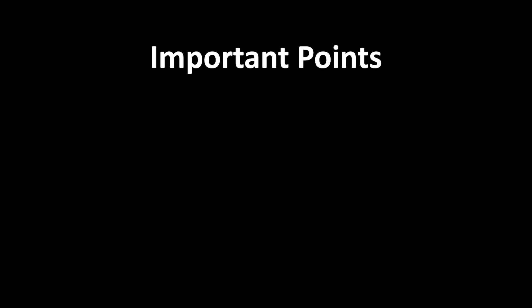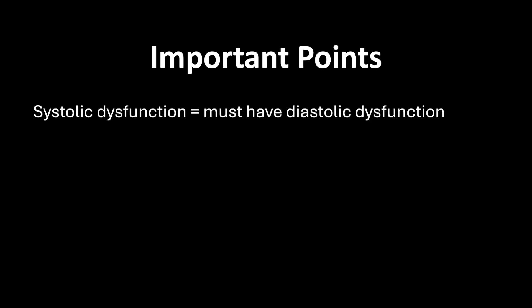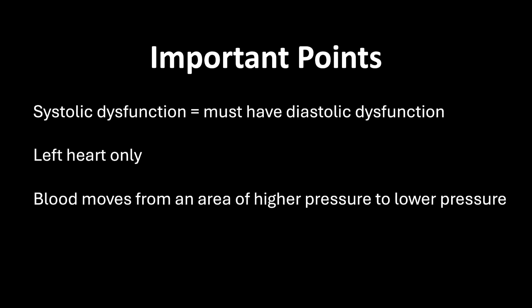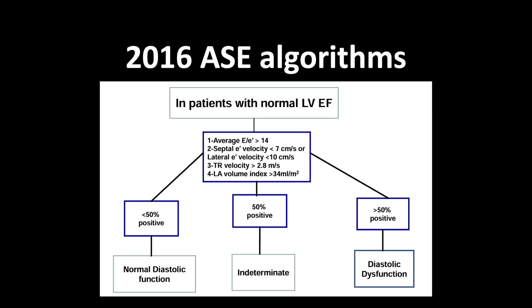A few important points to keep in mind: all patients with systolic dysfunction will have diastolic dysfunction, as abnormal contraction cannot be present without abnormal relaxation. The numbers we will discuss are relevant to the left ventricle only — the right ventricle has different values and is not as well studied. Remember that blood moves from an area of higher pressure to lower pressure; this concept will help you understand how E, A, and E' waves are derived. The first step in the ASE algorithm applies only to patients with normal systolic function, using normal EF as a surrogate.